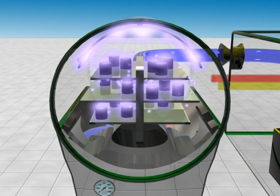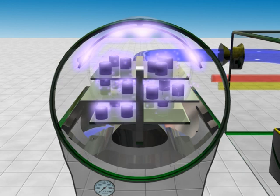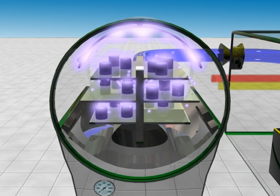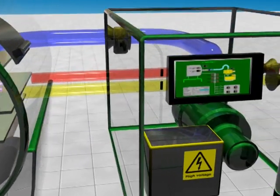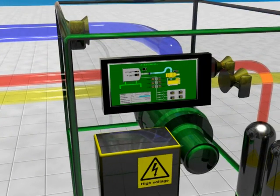Process times for an activation treatment are in the minute range and depend mainly on the type of plastic to be treated and the surface tension to be achieved. The process is automatically controlled and monitored by a control unit, which is operated via a keyboard and an LCD monitor.